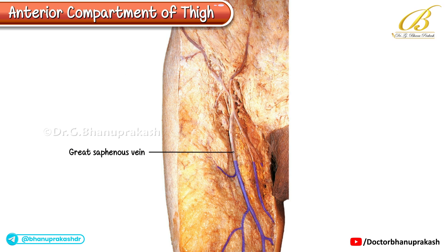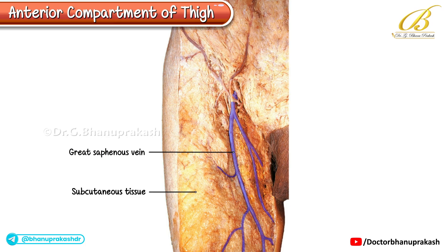The great saphenous vein is well appreciated here, along with its tributaries. This fatty layer you see is the subcutaneous tissue. The long saphenous vein is seen coursing obliquely toward the saphenous opening, where it drains venous blood into the femoral vein. A few tributaries of the great saphenous vein can be identified in this image.